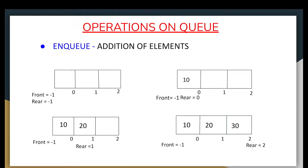The first operation is Enqueue, which means addition of elements. If the queue is empty, the first element added - for example, 10 - will come at the first position. The second element will come after 10, and the third element after 20. Here we have used front and rear indexes to indicate the position of the elements, which will help in the programming part of the queue.